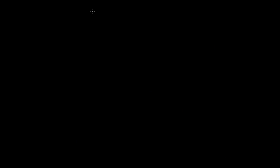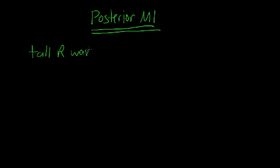Posterior MIs can cause tall R waves in leads V1 and V2, and often V3 as well. Basically, they appear as a mirror image of an anteroseptal MI over the x-axis.